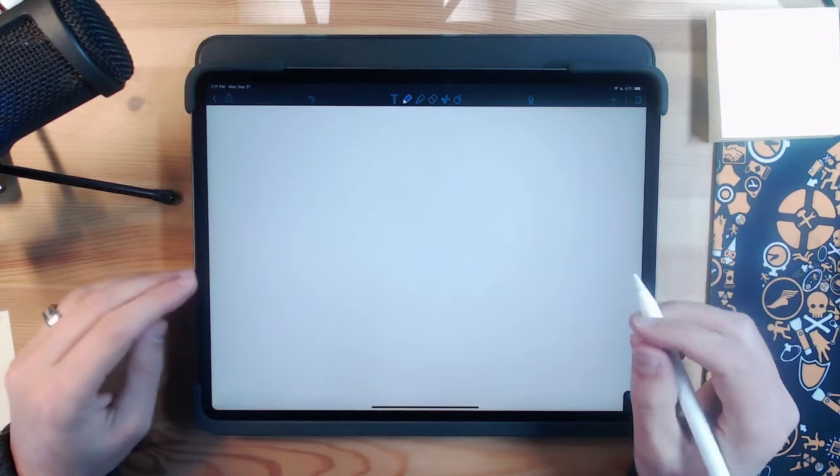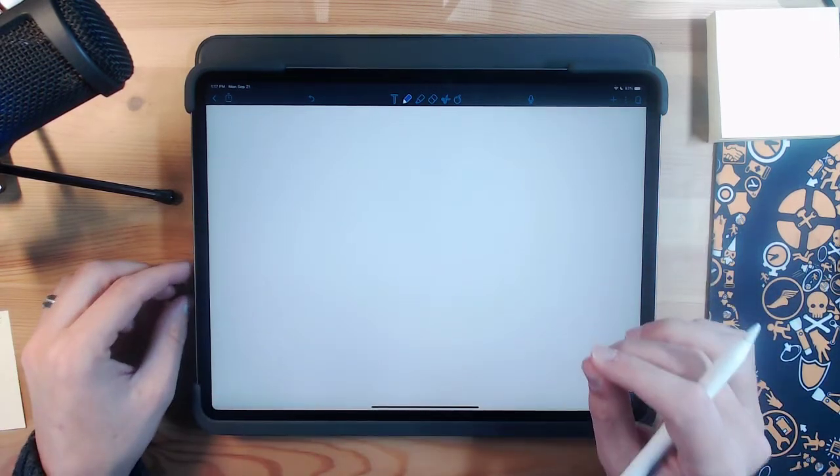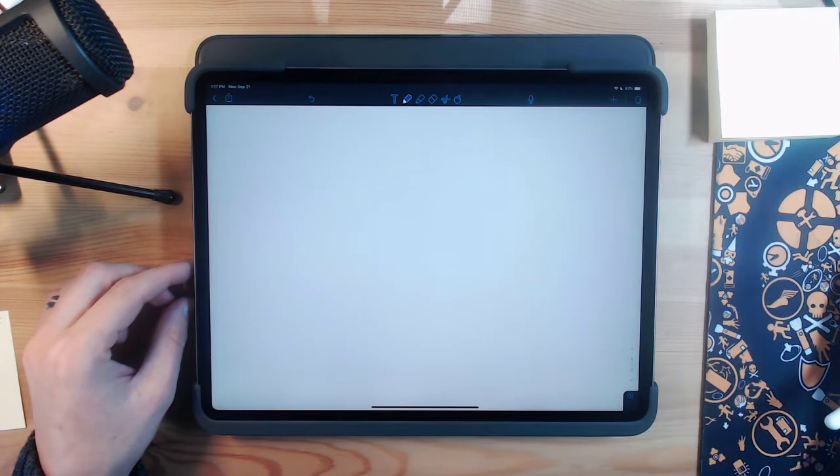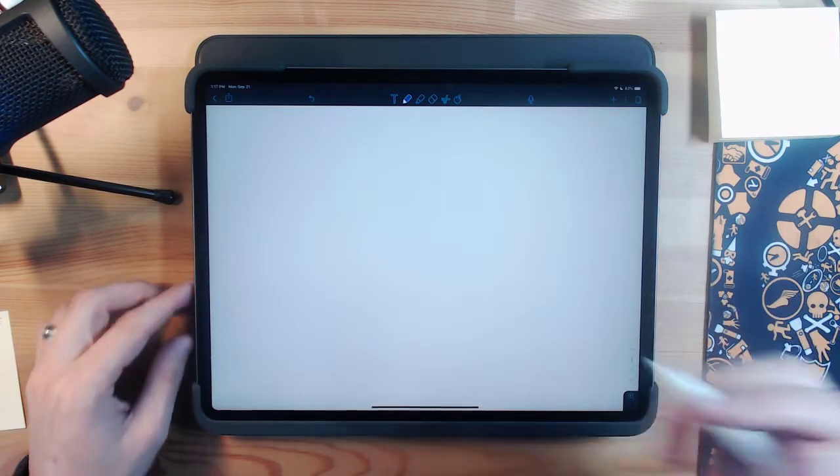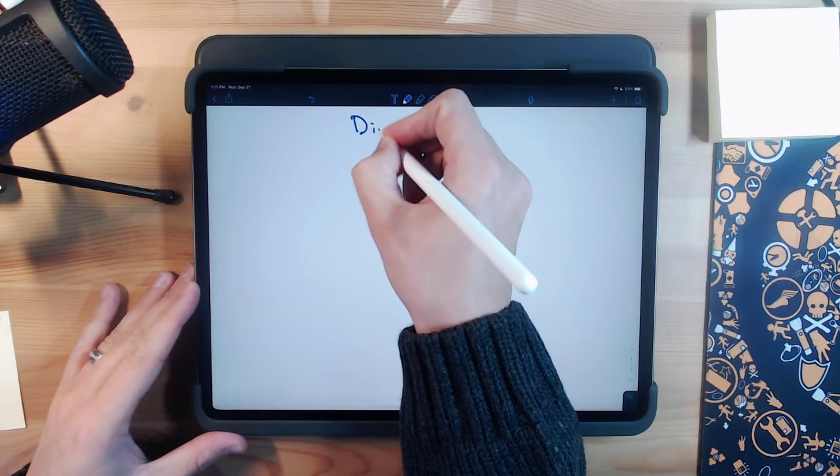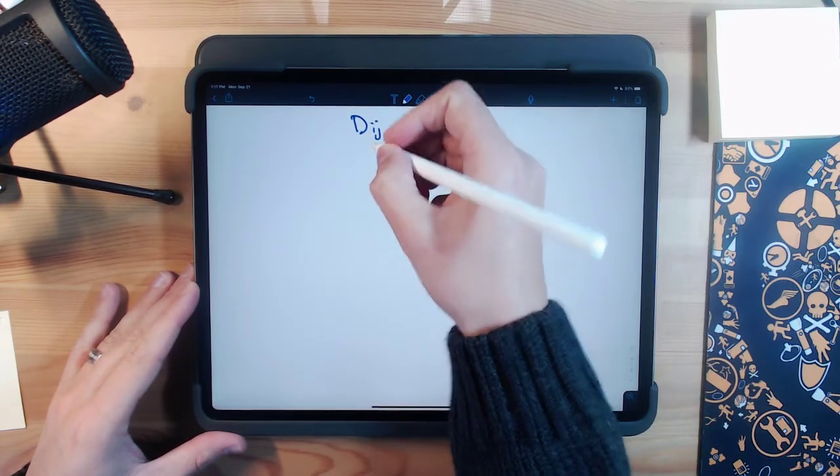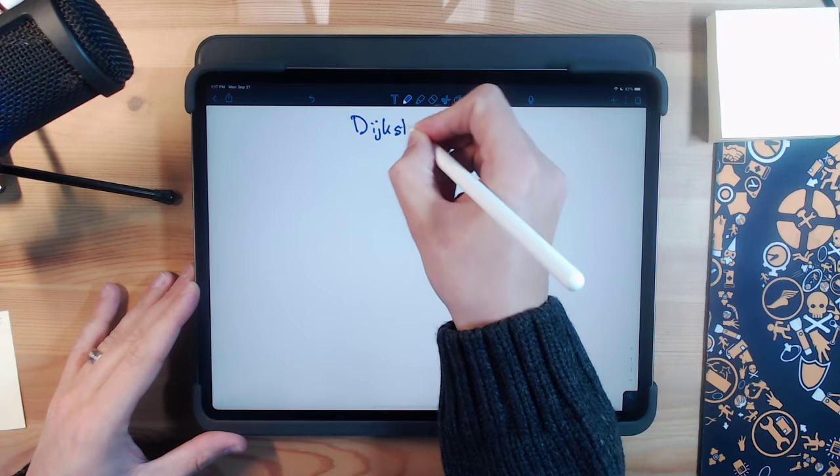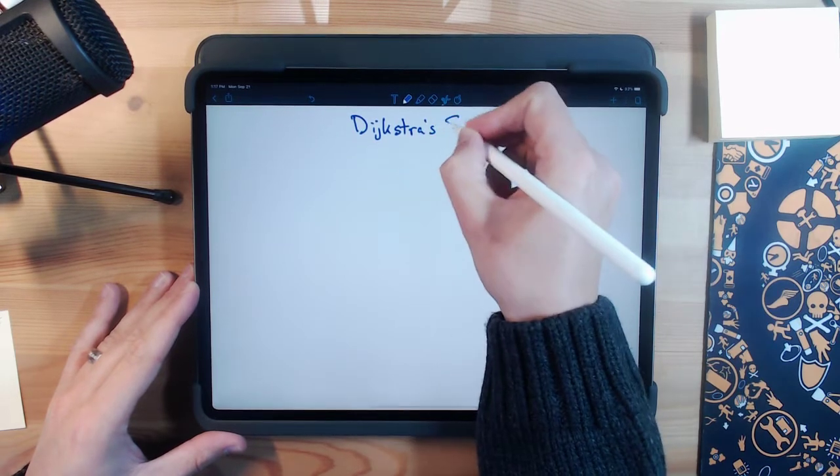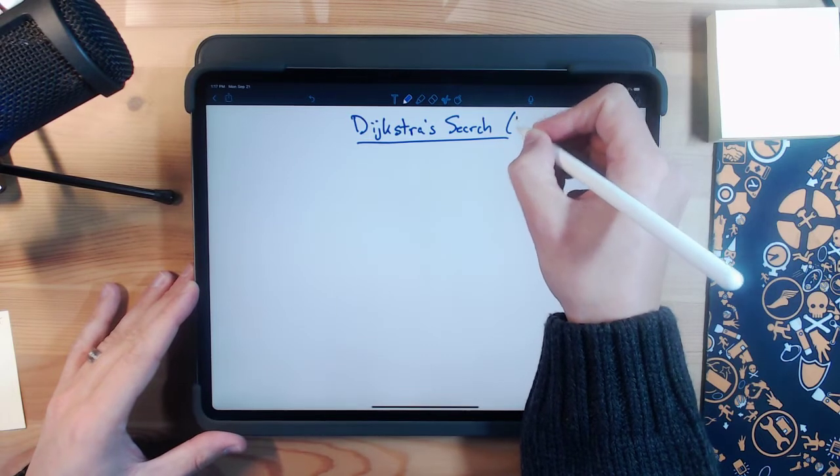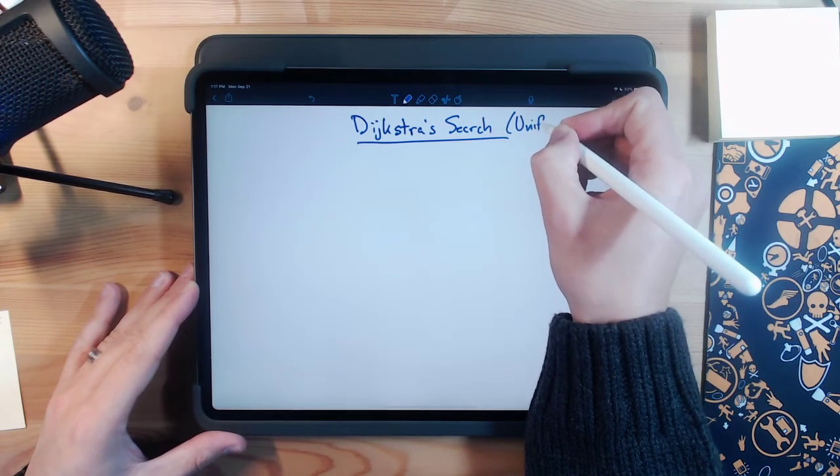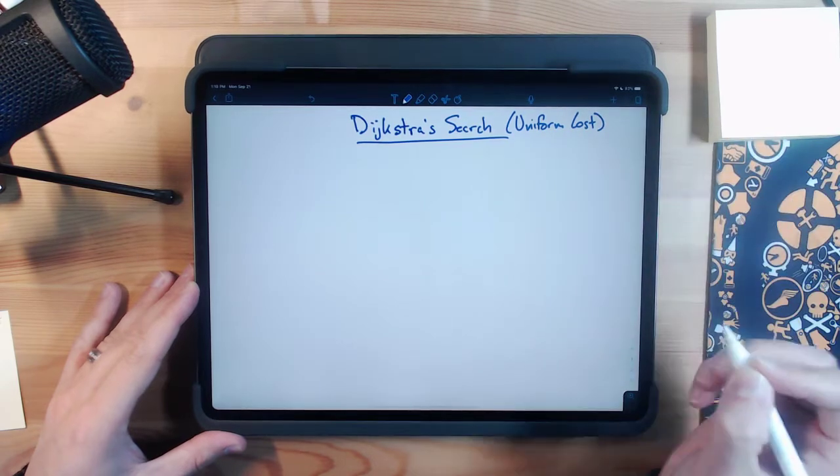In this video, I'd like to talk about a search algorithm called Dijkstra's search. Dijkstra's search is also sometimes called uniform cost search. Dijkstra is spelled D-I-J-K-S-T-R-A apostrophe S search.